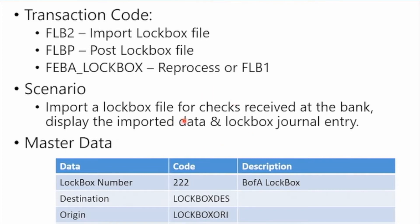In this scenario we're going to import a lockbox file for checks received at a bank, display the imported data, and show the lockbox journal entries. Our lockbox number is 222, we have a different destination and origin which links the lockbox to our company, and we're going to use this bank account to represent the lockbox that's receiving the cash. This is just a sample as we go through.